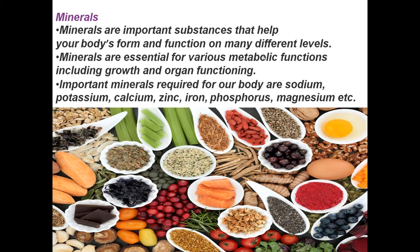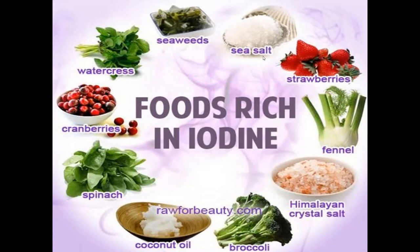Here are images of various food items that are rich in minerals. Food rich in iodine: seaweeds, sea salt, strawberries, fennel, Himalayan crystal salt, broccoli, coconut oil, spinach, cranberries, watercress are some of the food items that contain iodine.